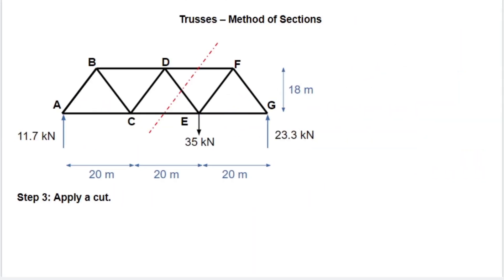So now that we've solved for our forces, our third step is to apply a cut. And this is really the heart of the method of sections approach. So we want to apply a cut through the truss, and our cut must cross through less than or equal to three members. Why three members? Well, we have, you'll remember, three equilibrium equations. So at most, we can only have three unknowns that we can solve for.